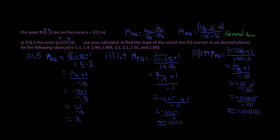Just like we've been doing in these last couple of videos, we want to do rise over run to find the slope of the secant line. We're going to use this equation: (Qy - Py) / (Qx - Px).